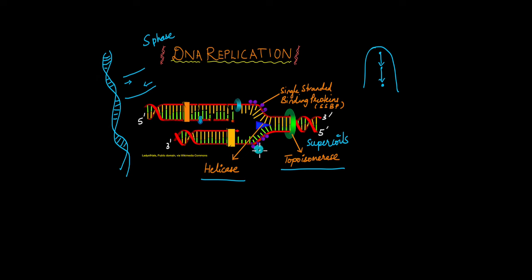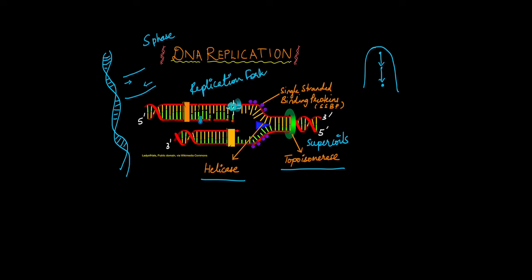Once the two strands are opened up, they are vulnerable to degradation by enzymes within the cell. Proteins known as single-stranded binding proteins bind to the single strands of DNA and prevent their degradation. This whole structure is known as the replication fork, and the place where it is initiated is known as the origin of replication.